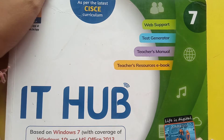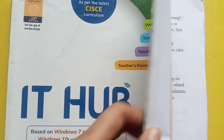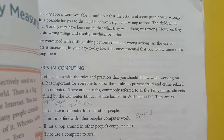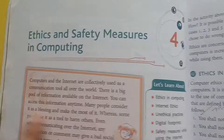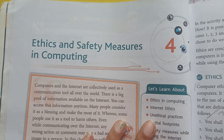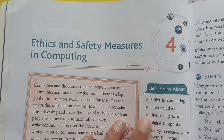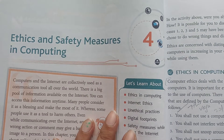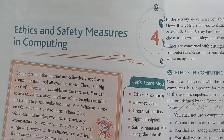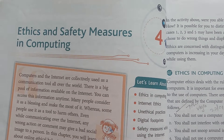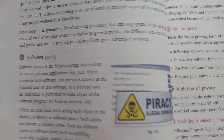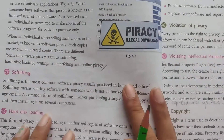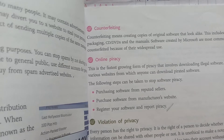So dear 7th class students, we were reading Chapter Number 4, that is Ethics and Safety Measurements in Computing — what we should do and what we should not do when we use computers and the internet. We were on software piracy. We have already read about software lifting, hard disk cloning, counterfeiting, and online piracy.